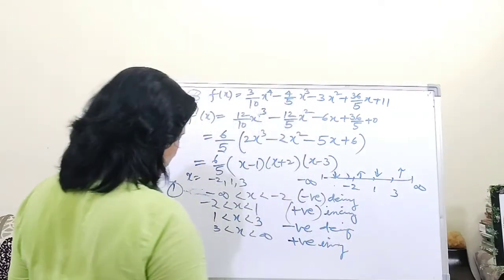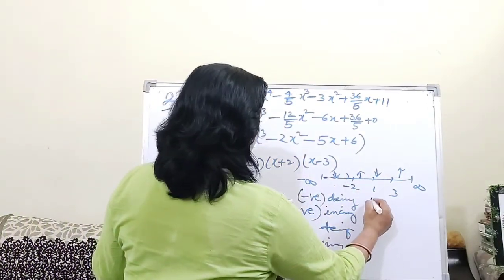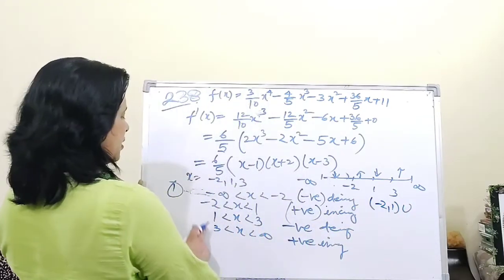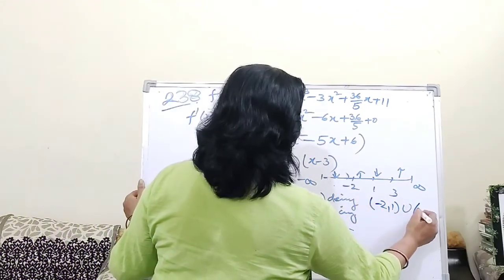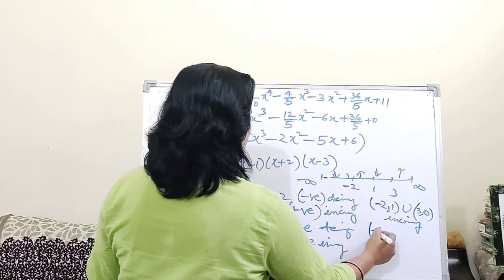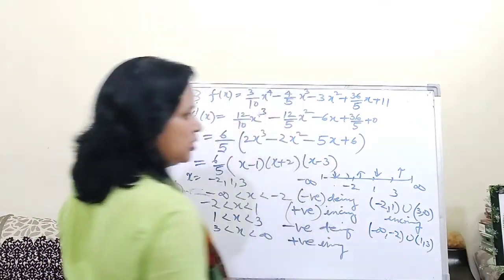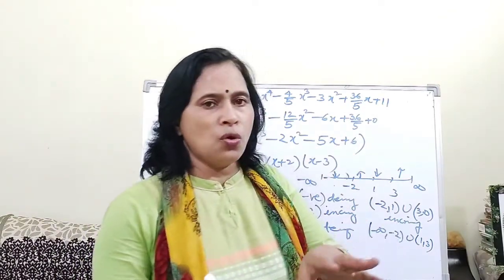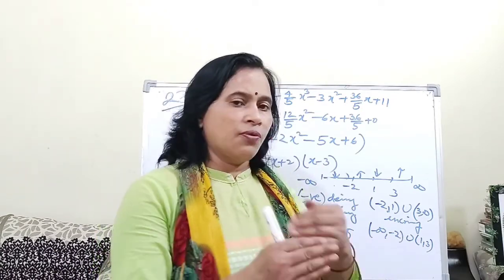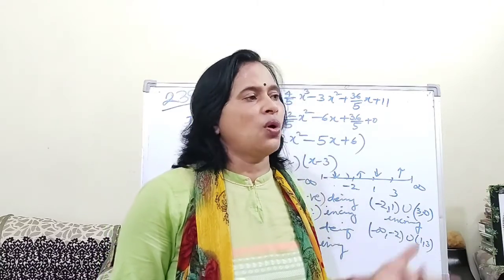So the final answer: the function is increasing on (-2, 1) ∪ (3, +∞), and decreasing on (-∞, -2) ∪ (1, 3). In the next video I will cover log functions, trigonometric functions, and exponential functions. Before that, make sure to note down this algebraic part of the exercise.